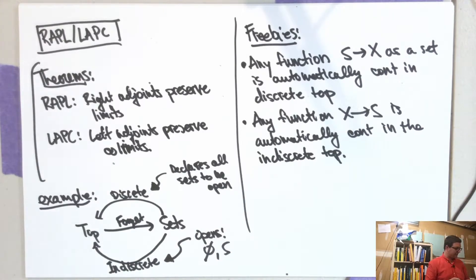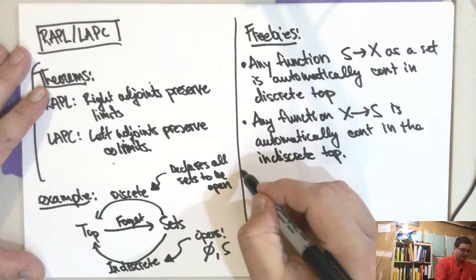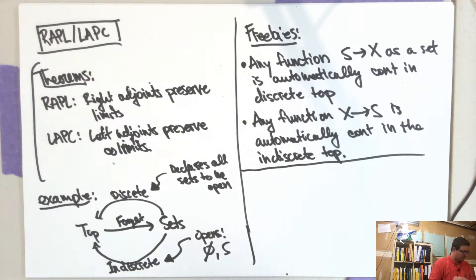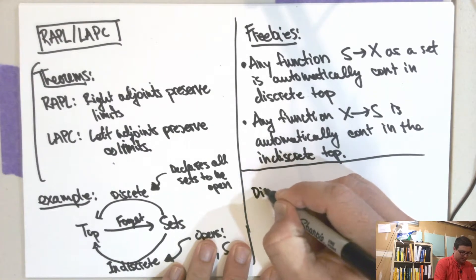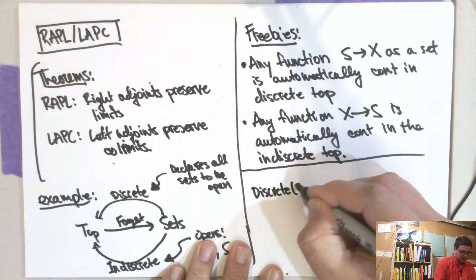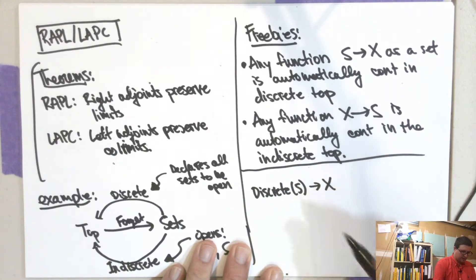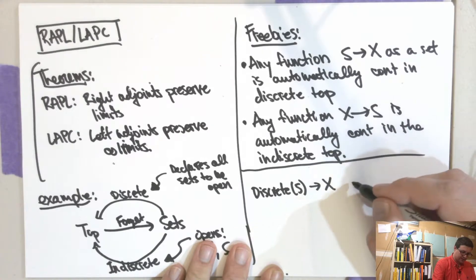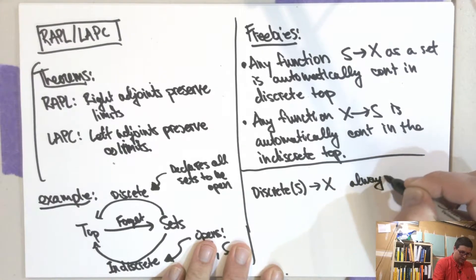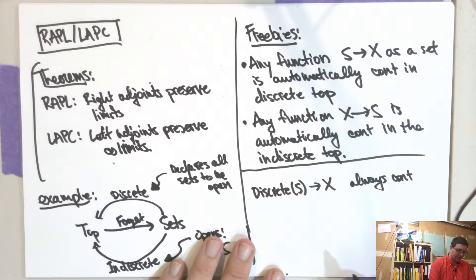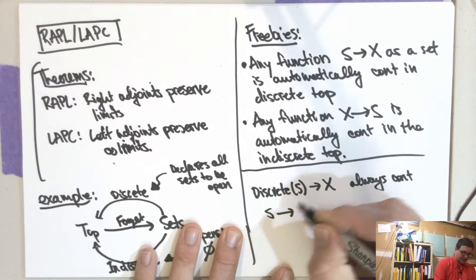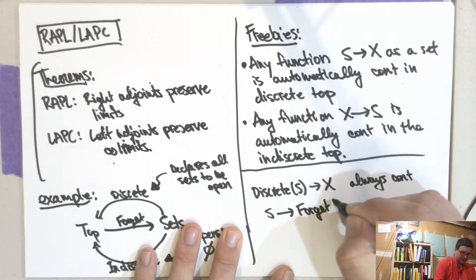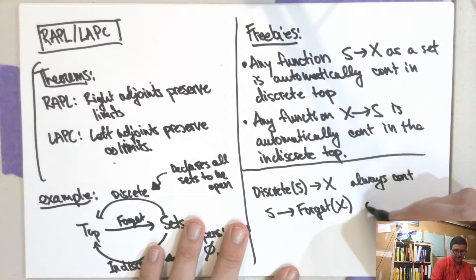The other thing is that any function from X to S — this is just a map of sets — is automatically continuous in the indiscrete topology. So we can write: in the category of topological spaces, this is always continuous, and it's determined by the map S to forget(X), which is just any function.